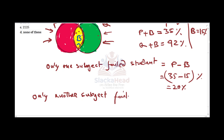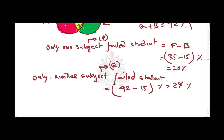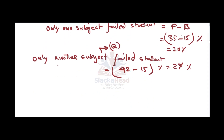Similarly, for only subject Q failed students, according to our Venn diagram this is only another subject Q. The only-Q failed percentage equals 42% minus 15%, which is 27%.